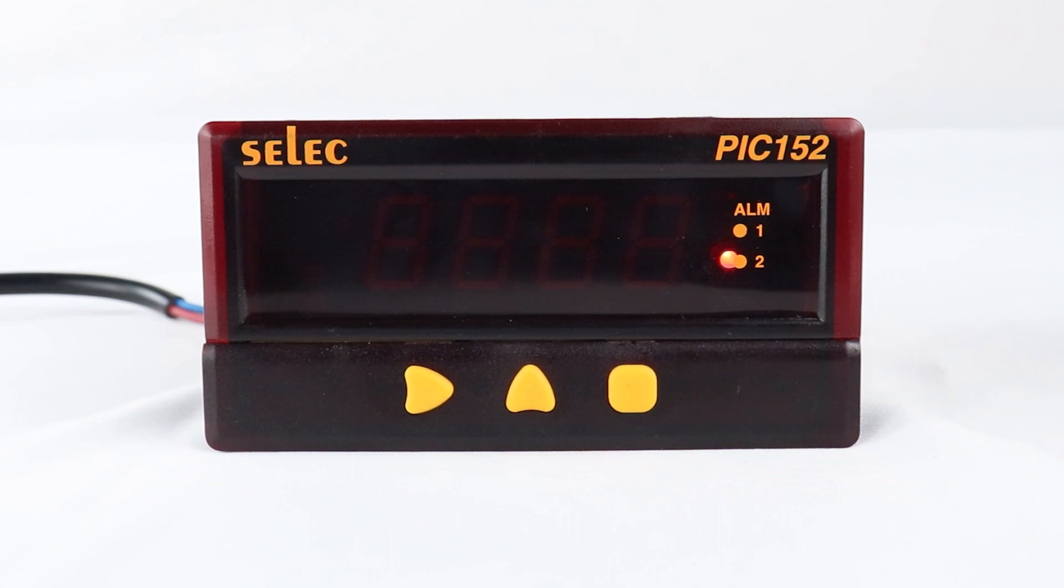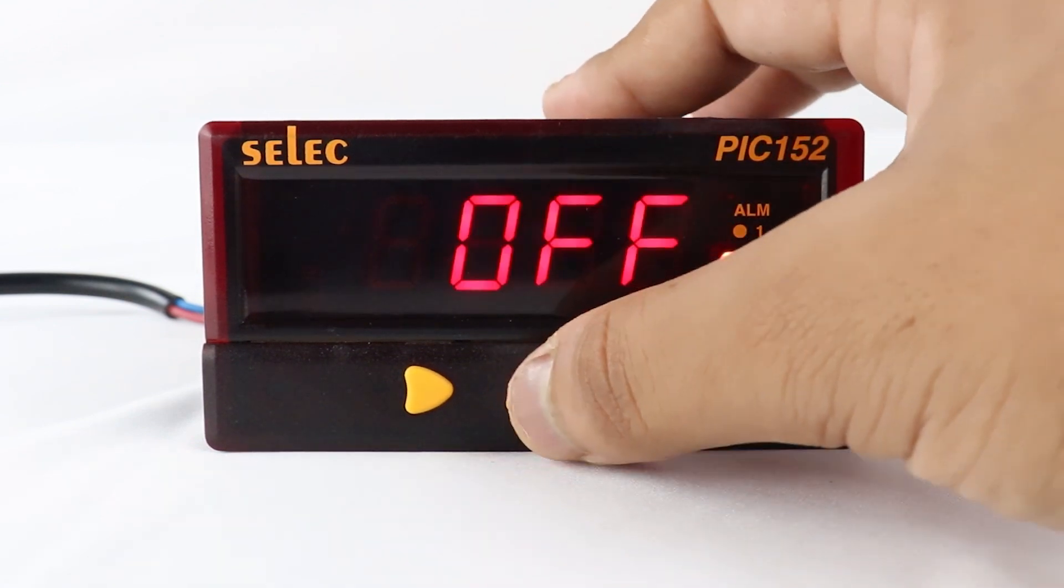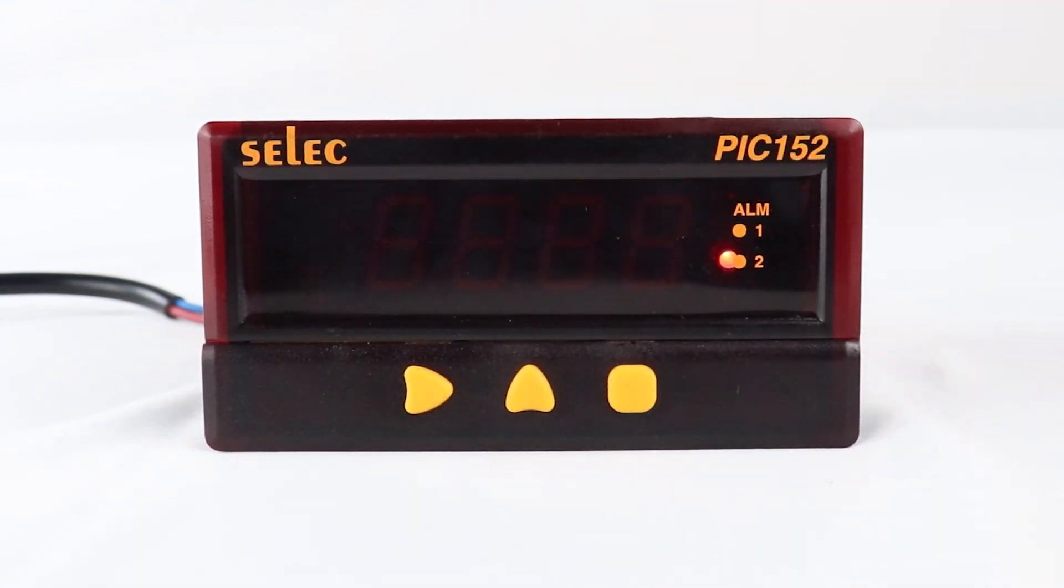Then, alarm hold status. When selected on, it prevents an alarm signal on power up, and in off condition, it does not prevent an alarm signal on power up.